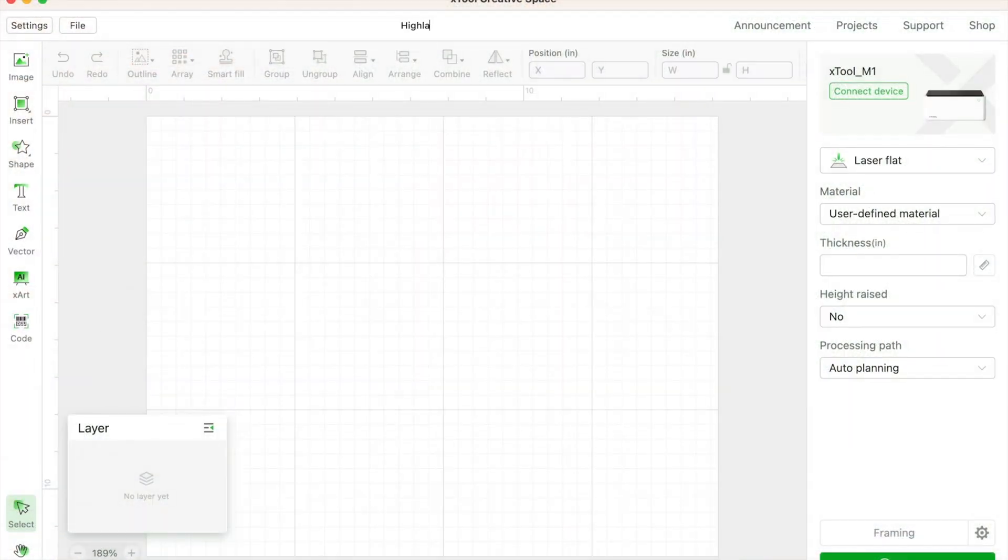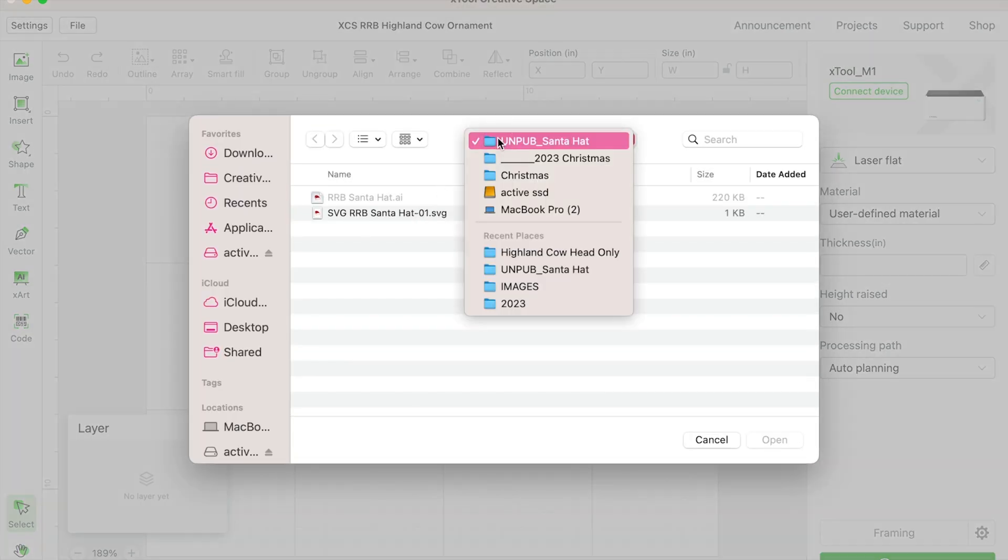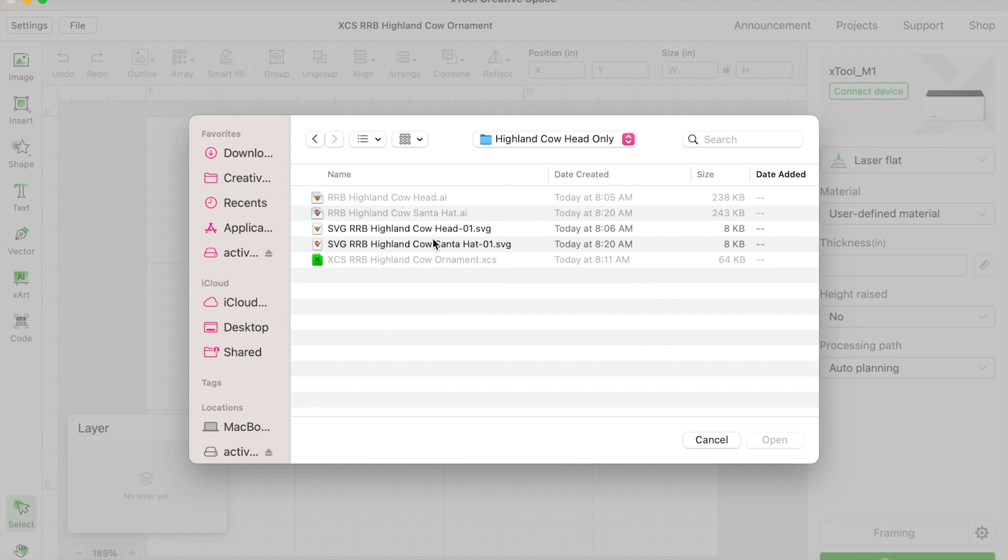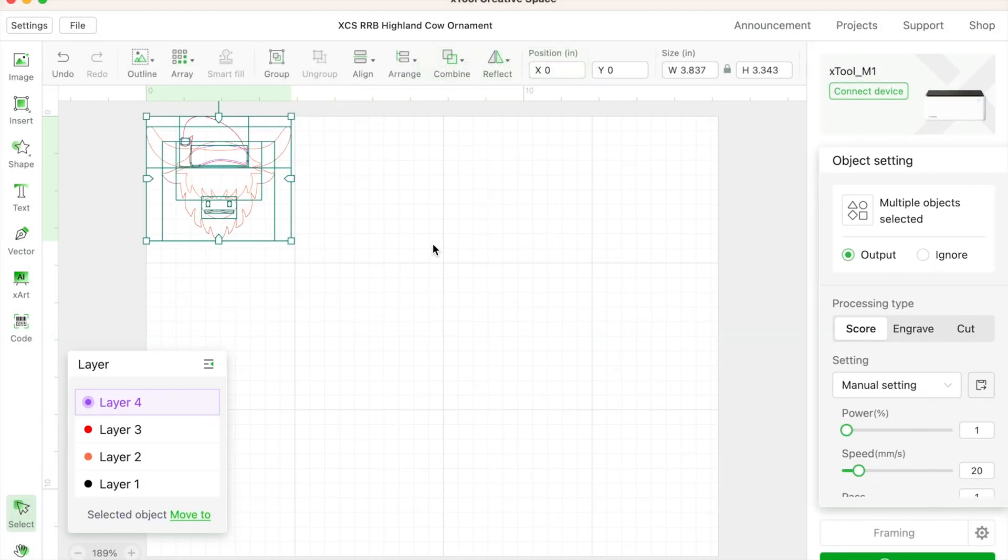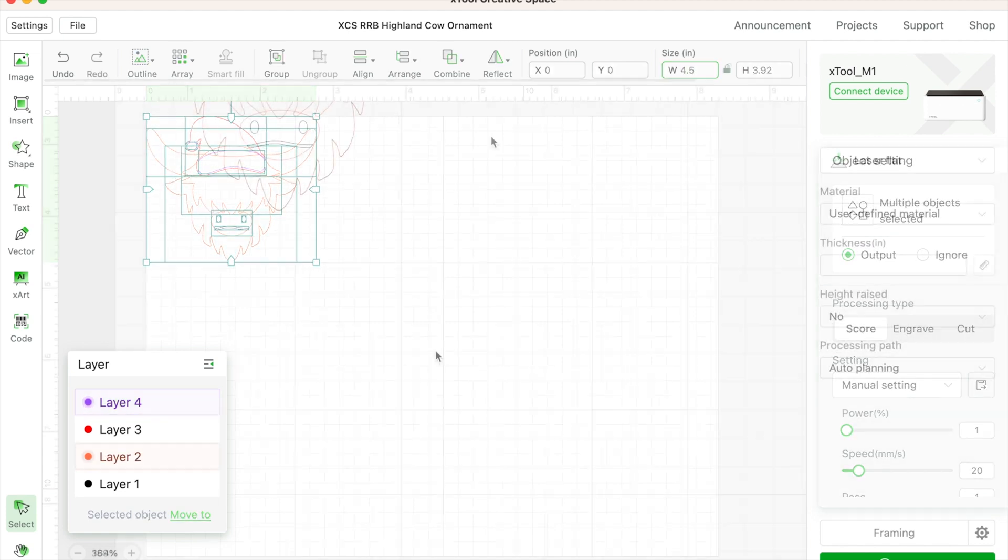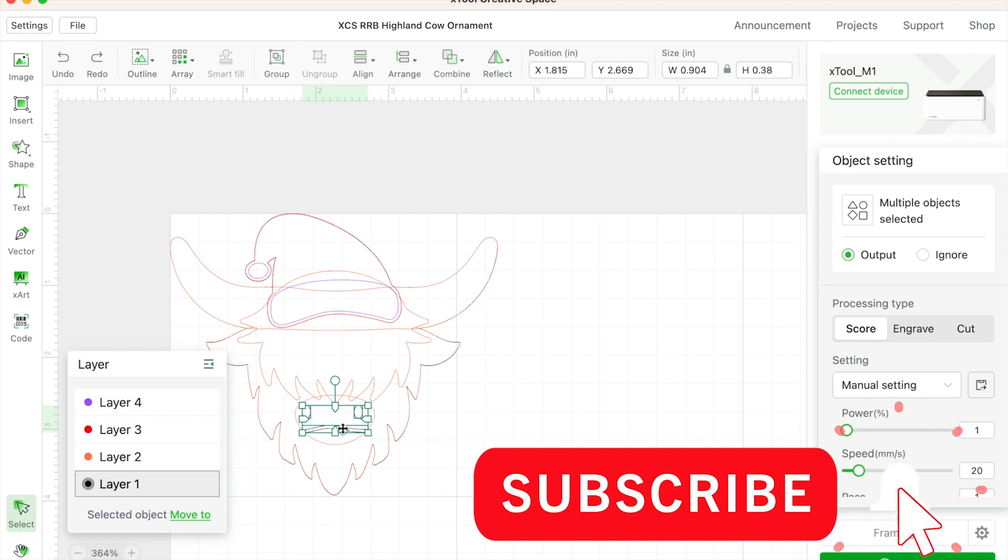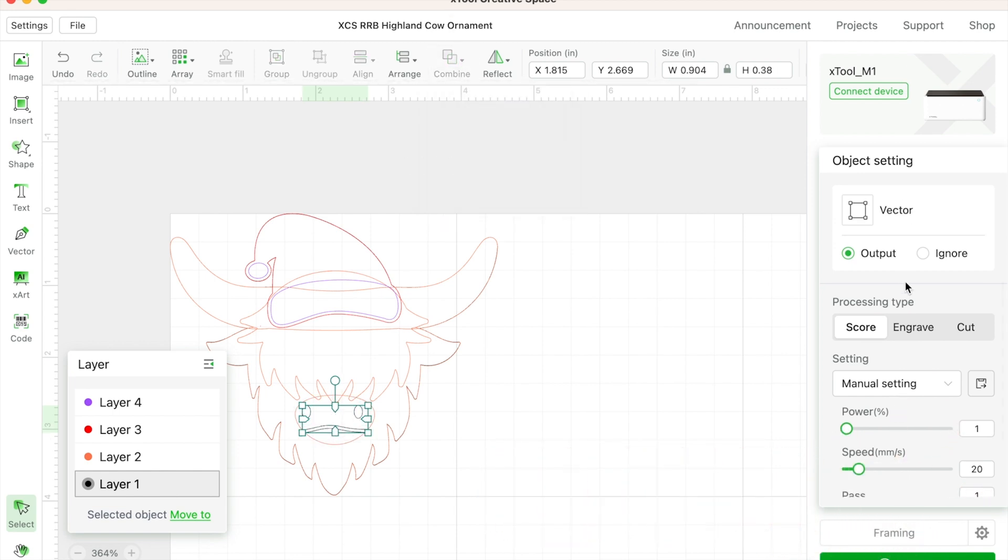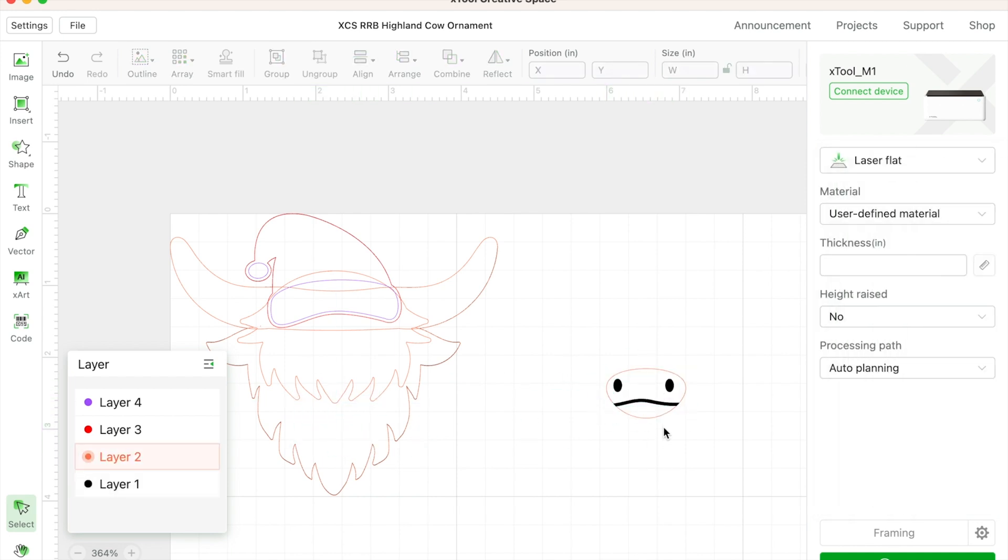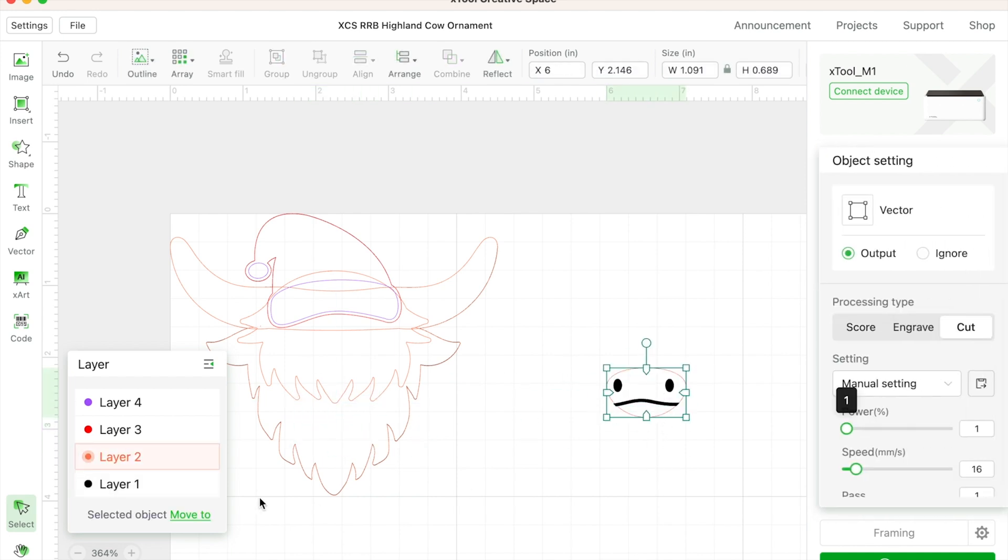For those of you who are learning how to work with SVGs inside of XCS software, you're going to create a new file and import the SVG. Now it comes in looking a little weird. With everything selected, just size it to whatever size you'd like.